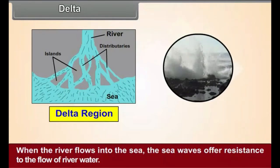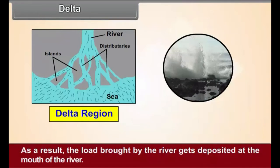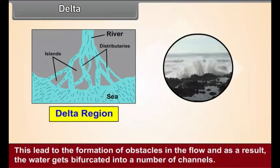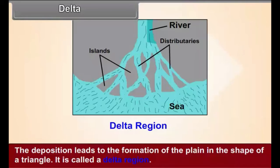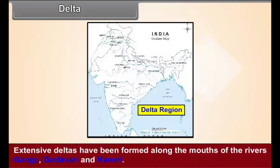Delta: When the river flows into the sea, the sea waves offer resistance to the flow of river water. As a result, the load brought by the river gets deposited at the mouth of the river. This leads to the formation of obstacles in the flow, and as a result, the water gets bifurcated into a number of channels called distributaries. The deposition leads to the formation of a plain in the shape of a triangle, called a delta region. Extensive deltas have been formed along the mouths of the rivers Ganga, Godavari and Kaveri.